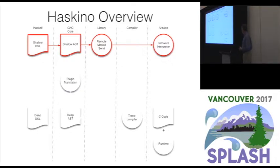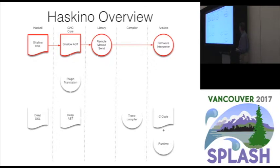When we started Haskino, the first thing we created was a shallow domain specific language that the user could program in on the host in Haskell. We have a firmware interpreter written that runs on the Arduino — it's a bytecode interpreter that can execute the results. We translate the shallow AST into bytecode and send it over a tethered USB serial connection to the Arduino, using a library we've developed at KU called the Monad Library.